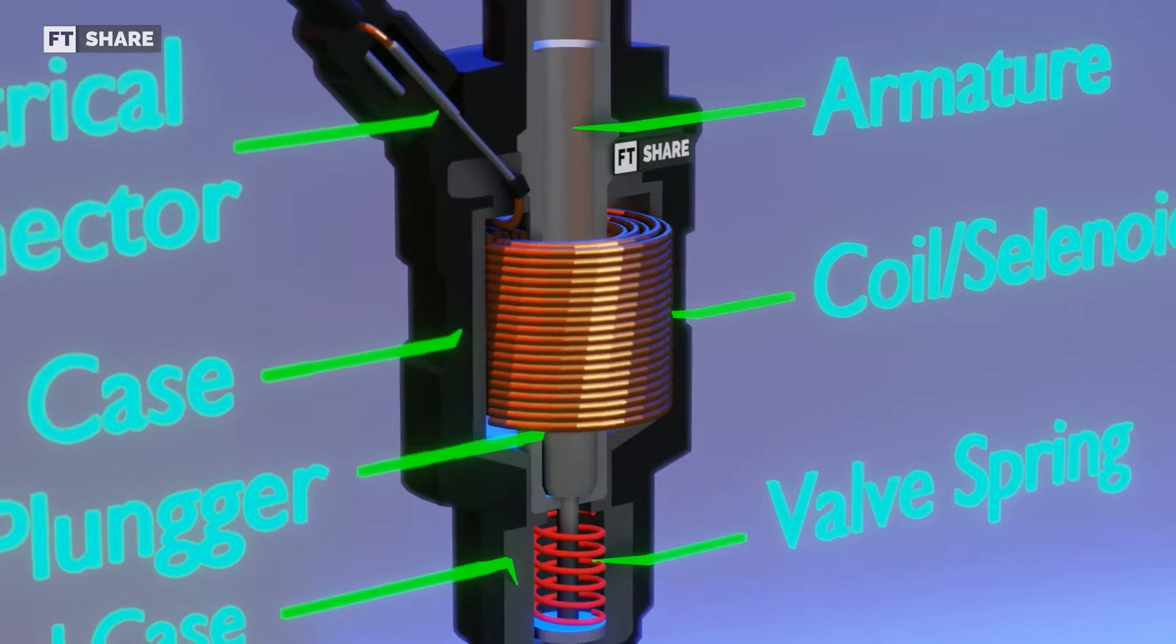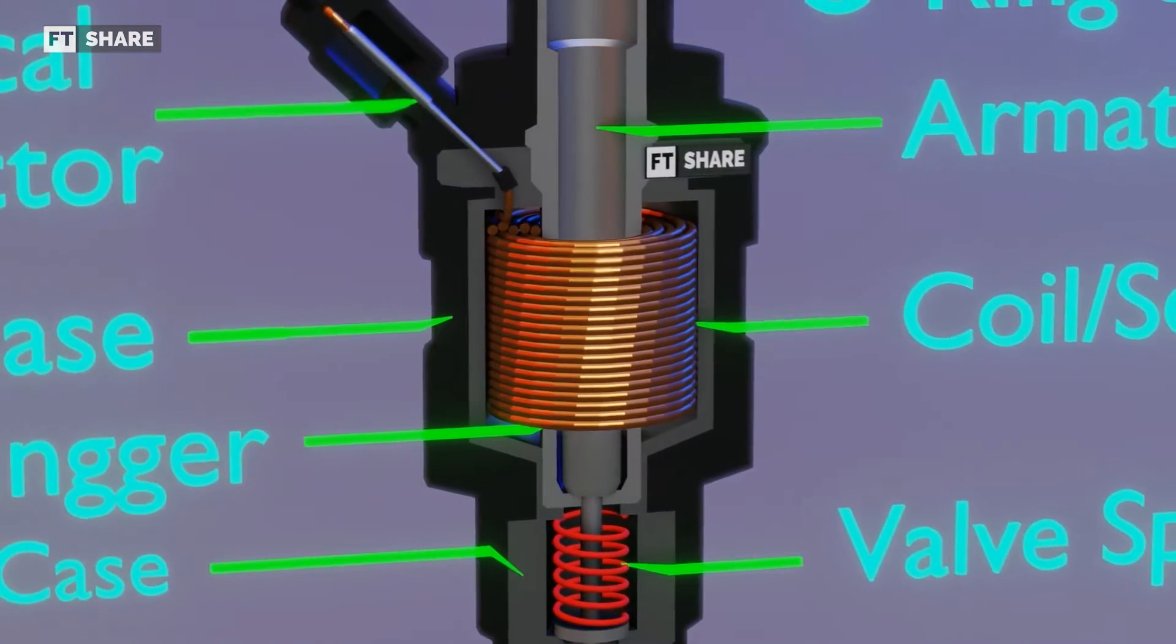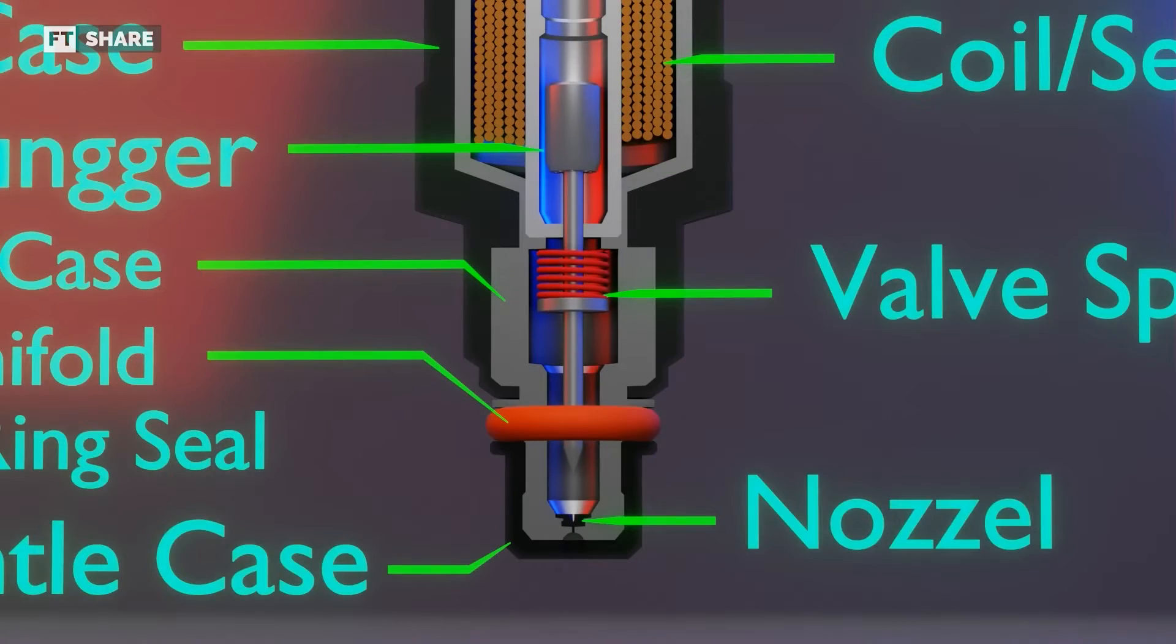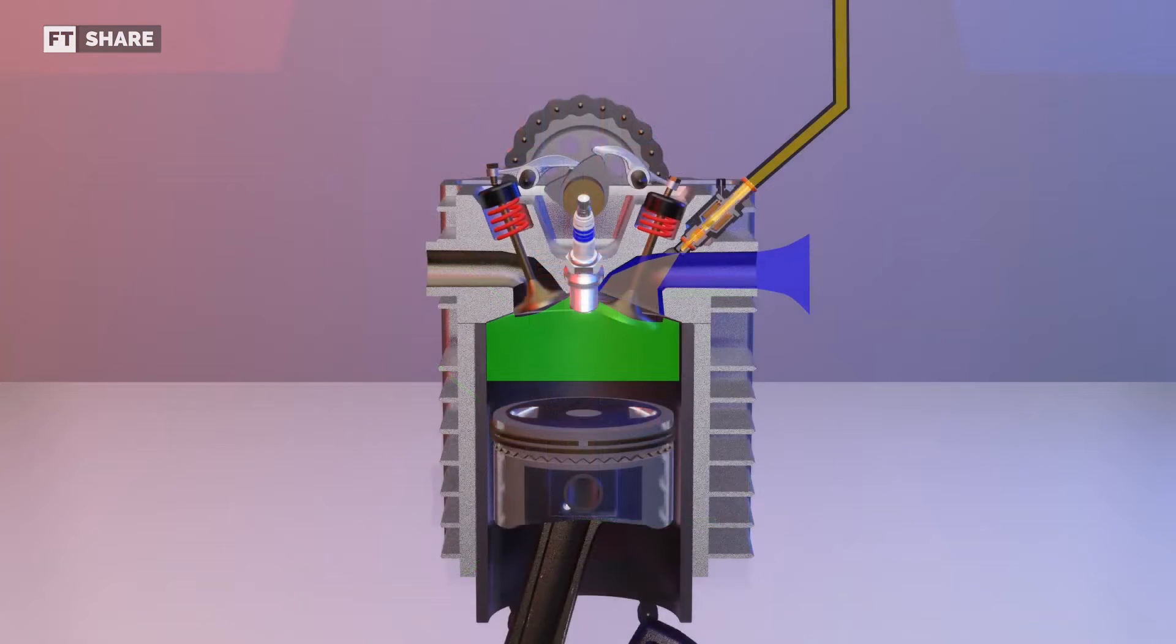This coil functions to convert electrical energy into a magnetic field and attracts the plunger with its iron material. At the same time, the valve will lift and then open the nozzle channel. Of course, the high fuel pressure, as well as the small diameter of the nozzle port, makes the liquid fuel come out at high speed.